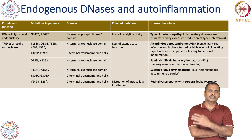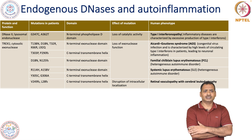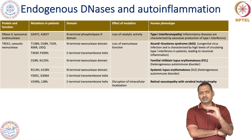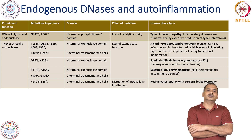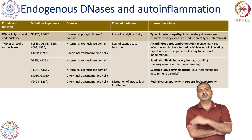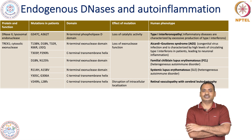TREX1, which is a cytosolic exonuclease, is quite well characterized — many mutations are reported. There are two major groups of mutations. One group is associated with loss of exonuclease function, and this loss results in various congenital diseases like Aicardi-Goutières syndrome (AGS). AGS is also associated with MDA5, as I discussed in the RLR session.